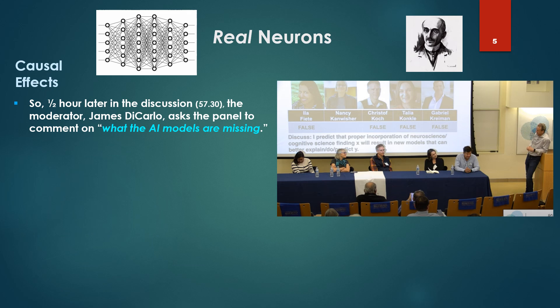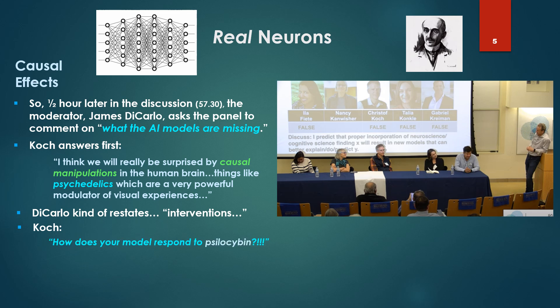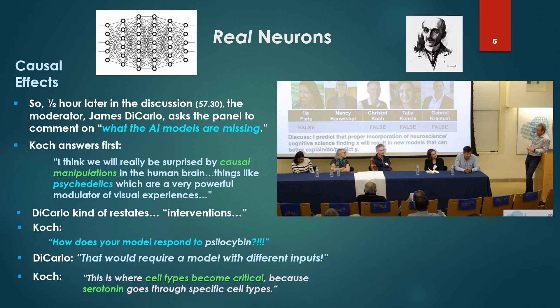About half an hour later in the discussion, at the 57:30 mark, moderator James DiCarlo asked the panel to comment on what AI models are missing. Koch answers first: 'I think we will really be surprised by causal manipulations in the human brain — things like psychedelics, which are very powerful modulators of visual experiences.' DiCarlo restates: 'So you're talking about interventions — how does your model respond to psilocybin?' Koch is trying to break through that framing.